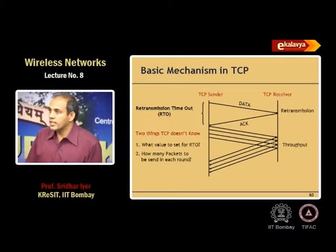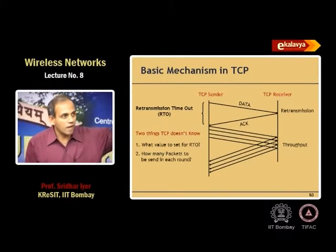The problem is TCP does not know what network it is operating on. It does not know whether the receiver is on the same LAN or halfway across the world. It has to figure out both the RTO and the window size. How many packets to send per round is relatively easier to figure out.